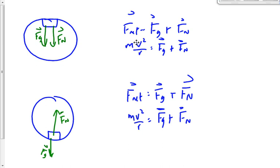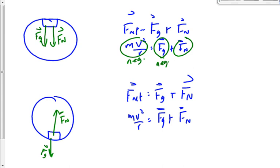At the top of the circle, M·V²/R is negative because both gravity and the normal force act downward — toward the center — so the centripetal force points downward. Gravity is always negative (downward), and the normal force at the top is also drawn downward, so it's negative as well.